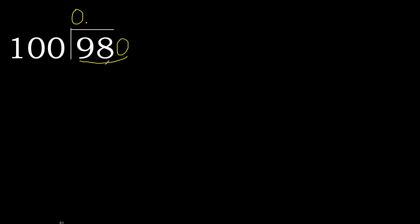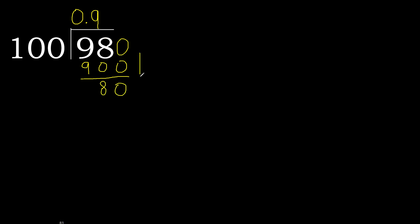980 is not less, therefore work with 980. 100 multiplied by which number is nearest to 980 but not greater? 100 multiplied by 9 is 900 — not greater. Subtract. Next. There is no number, therefore complete.